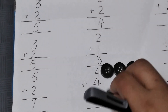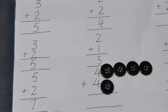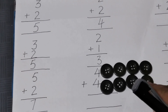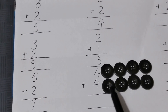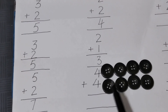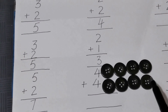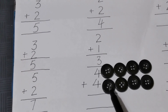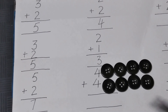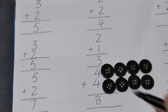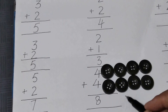Now four plus four. One, two, three, four — and four plus four. We will add four plus four. Now we will count how many total buttons there are: one, two, three, four, five, six, seven, eight. The total answer is eight. Total buttons are eight.